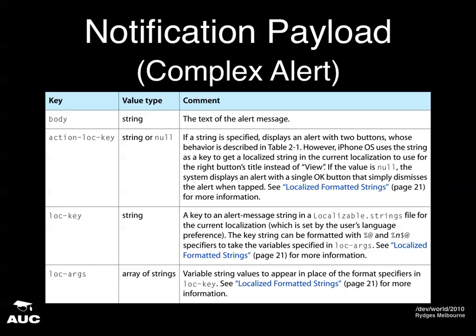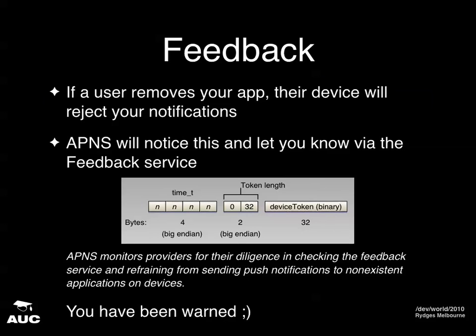There's also an 'action-loc-key.' If you've seen a push notification, you know it usually says 'cancel' or 'view.' By default you get a cancel button and a view button — if the person taps view it launches your application; if they tap cancel it doesn't. With this action-loc-key you can either change the string on the view button, or say I don't want a view button at all — it's just informative — all I want is an OK button. The key for the button label has to already be in your app.